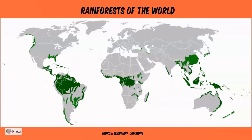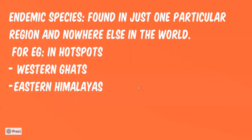In terms of biodiversity hotspots, India has two: the Western Ghats and the Eastern Himalayas. Something interesting about biodiversity hotspots is that they also have a lot of endemic species — species found only in a specific region and nowhere else in the world — making them conservation priorities.